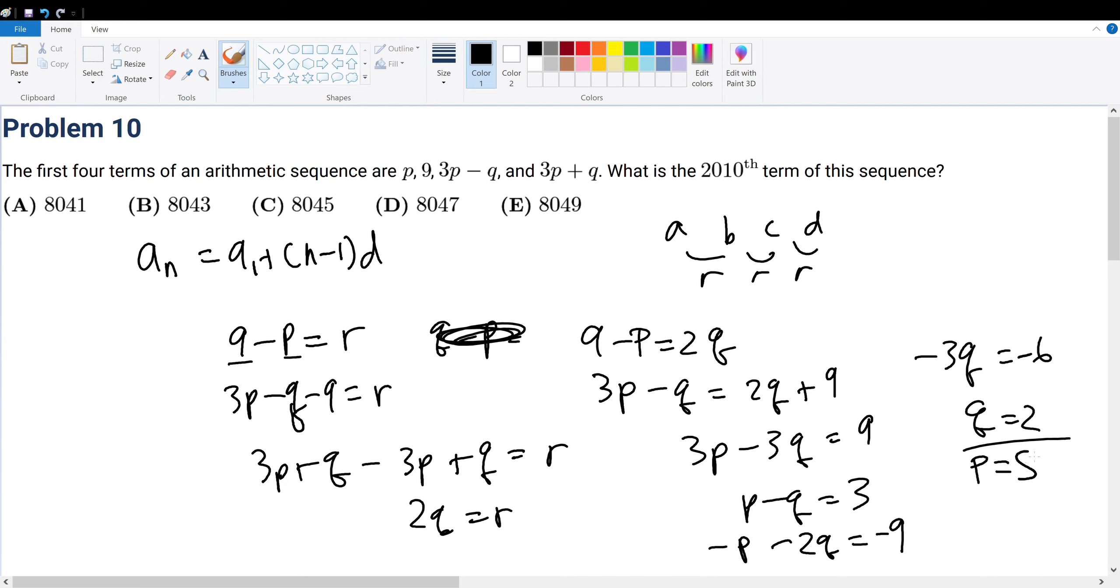If q is equal to 2, that means p is equal to 5. If p is equal to 5, then that means r is equal to 4. If r is equal to 4, then we've solved this question.